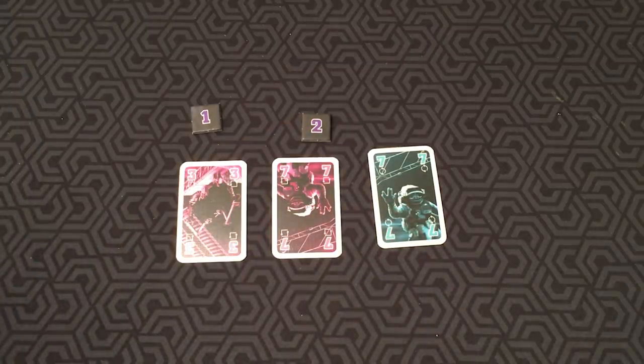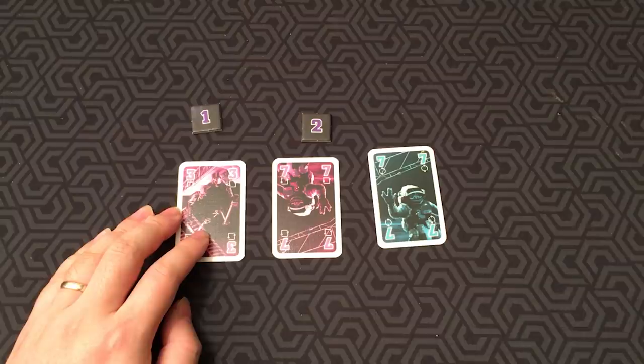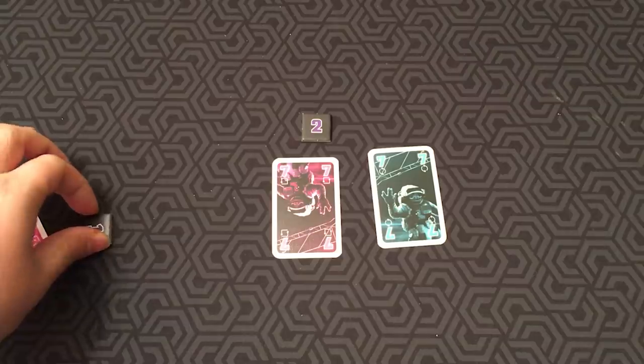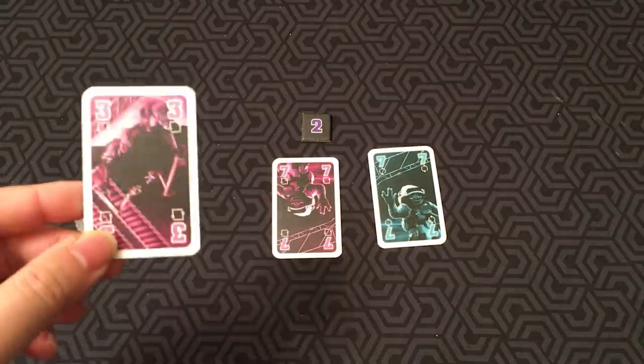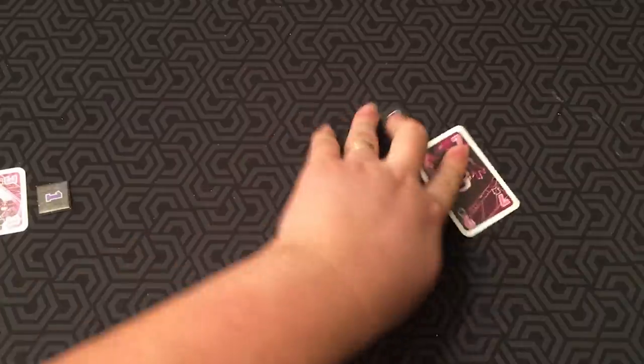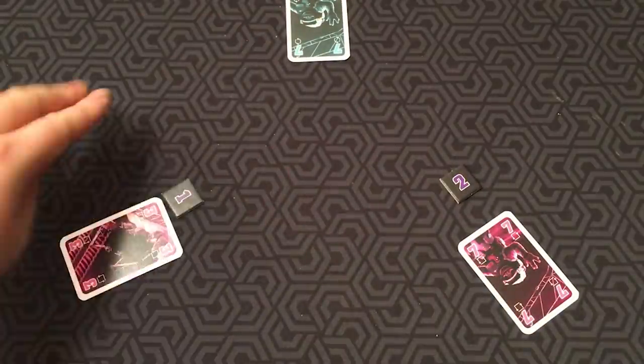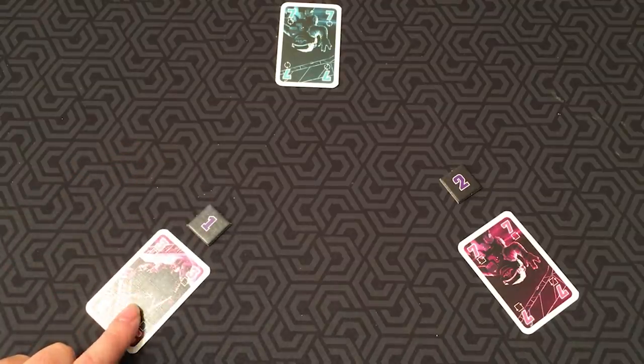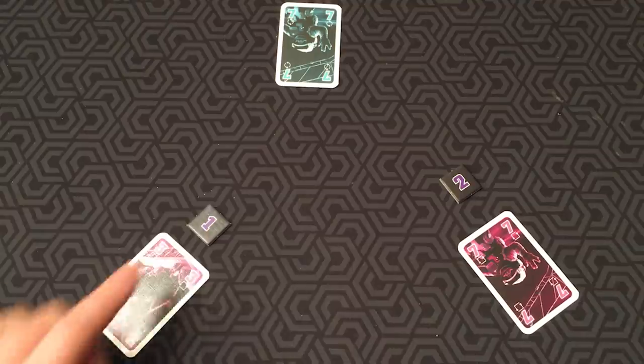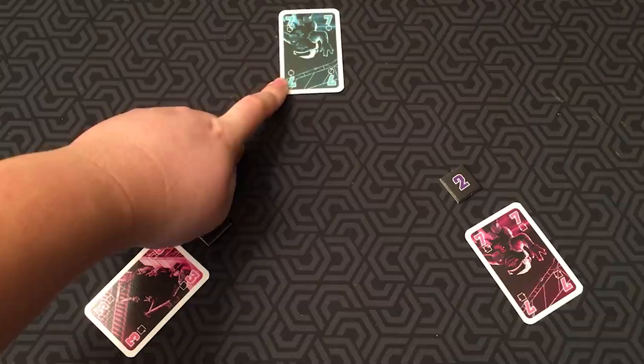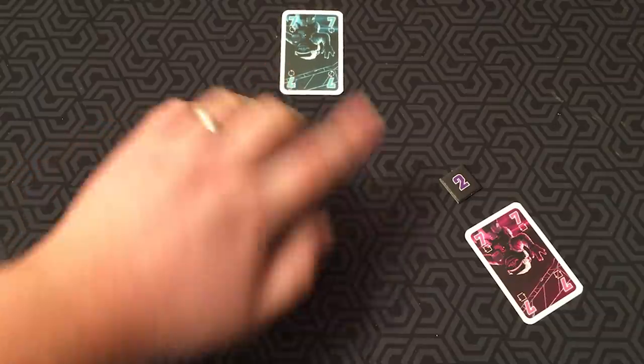And what happens is each of you takes a turn to choose one of these cards. Let's say the commander goes, okay, I'm going to take this one. That means the commander has to first win this particular card during the game. Then let's say player two goes, okay, I'm going to take this one. And player three takes this one. So now we know the order of which player needs to take what. The commander needs to win the pink three first. Then after that, player three needs to win the pink seven first. And finally, this player needs to win the blue seven. That is the order of events.